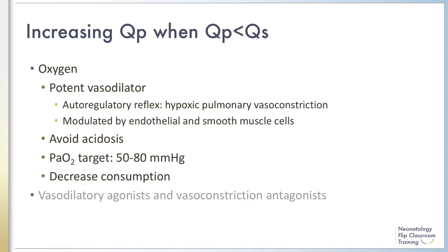In Module 1, we reviewed the concept of QP to QS ratio, where Q is flow, QP is pulmonary blood flow, and QS is systemic blood flow. In PPHN, we can use strategies to address either side of this ratio. First, we will discuss methods to increase QP directly.